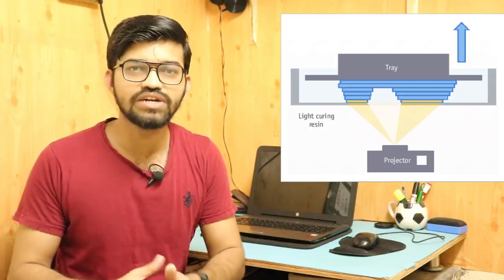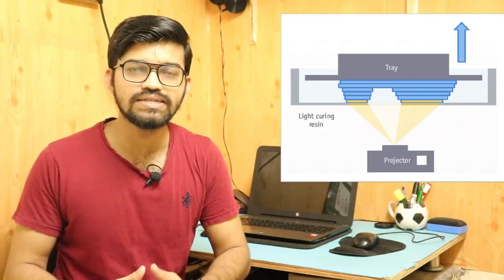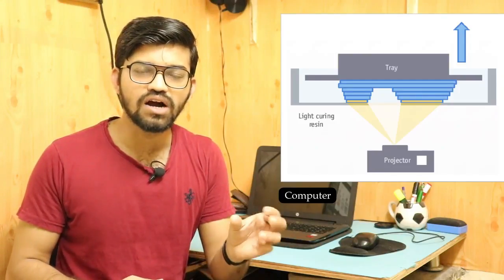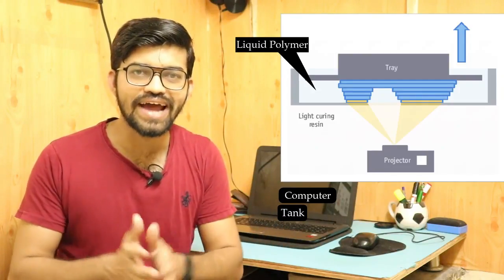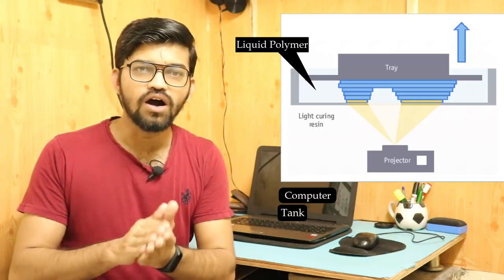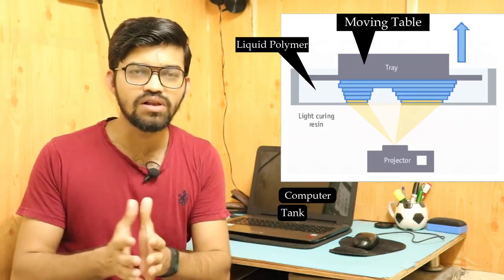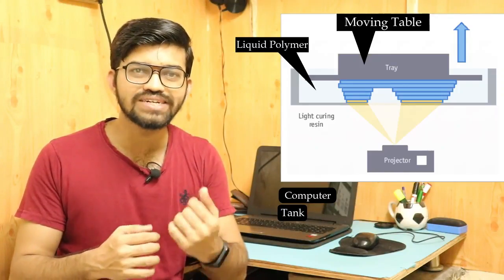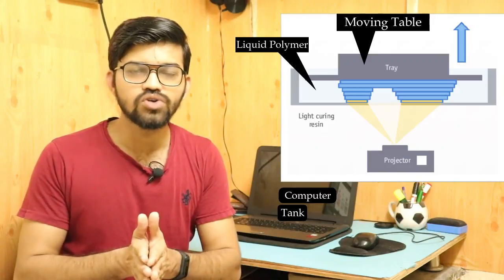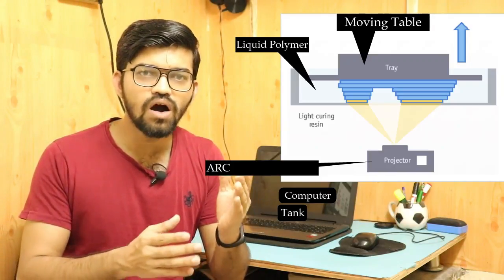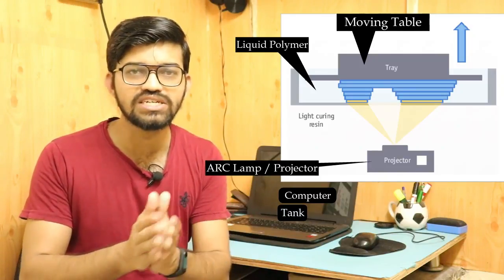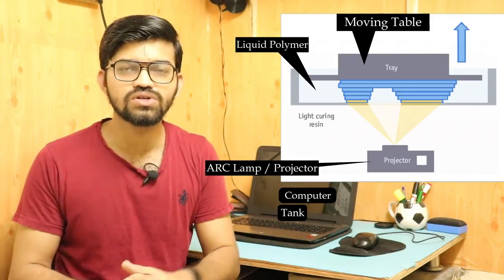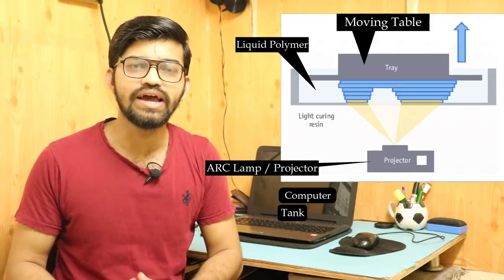In the DLP process, the equipment required is very much the same: a computer, a liquid photopolymer, a tank or vat, and a platform with a vertical lifting arrangement that moves up and down. Also required is an arc lamp paired with an LCD monitor.